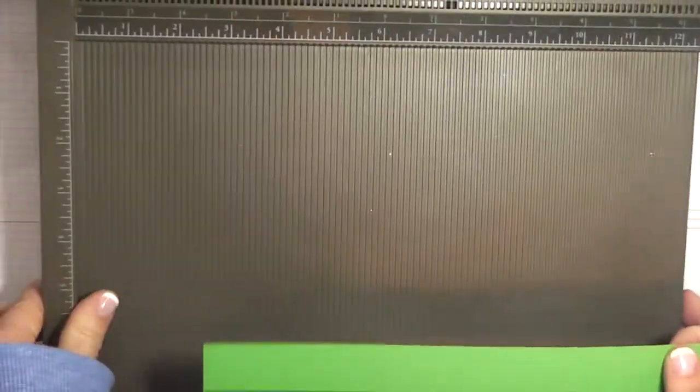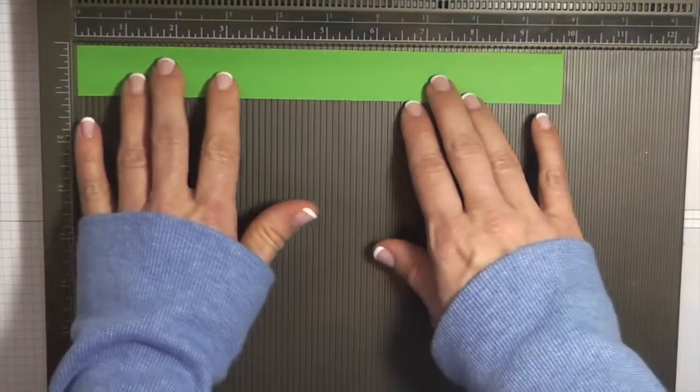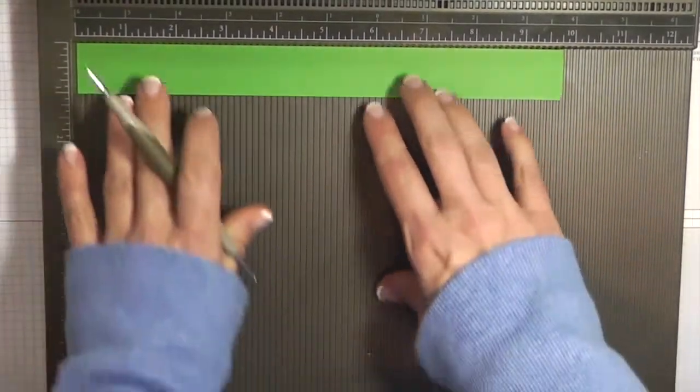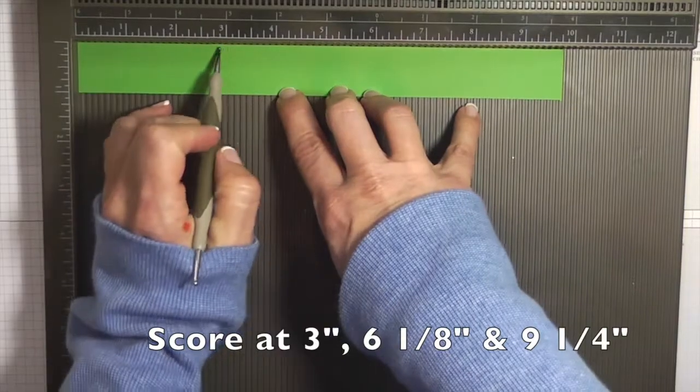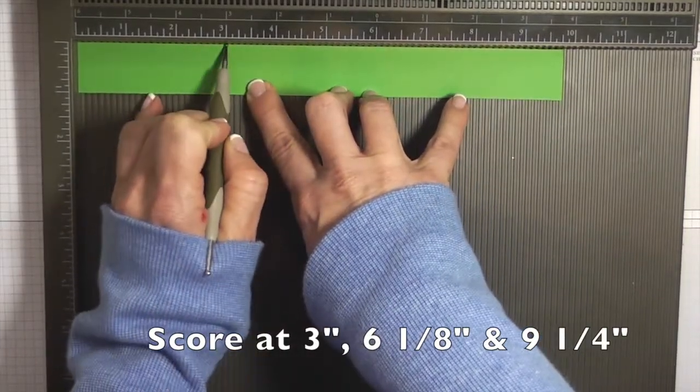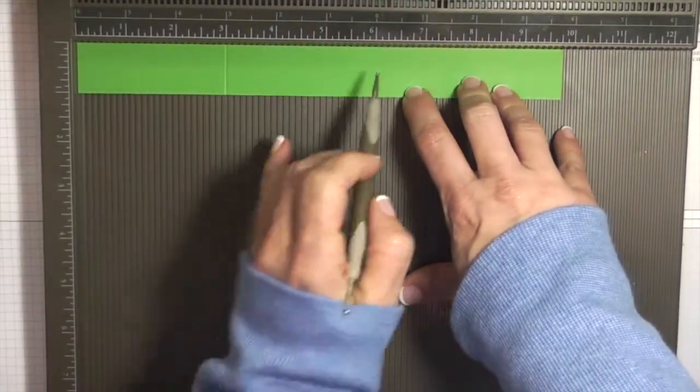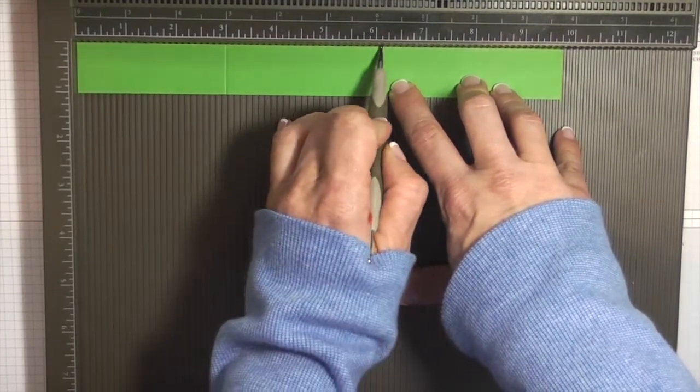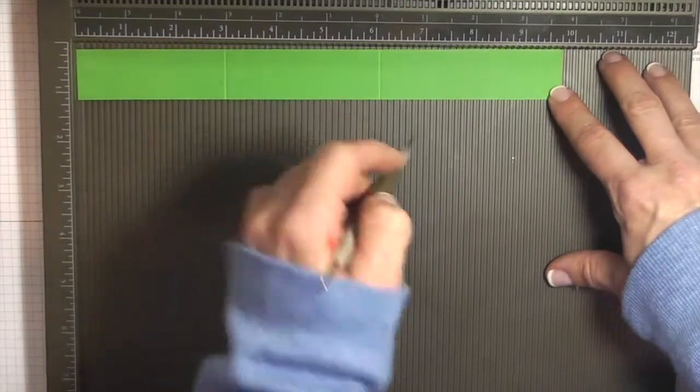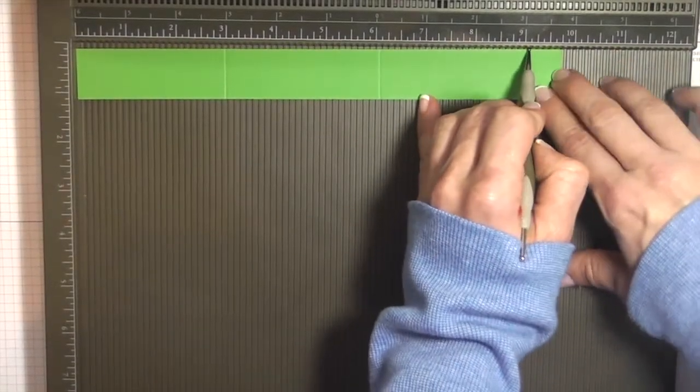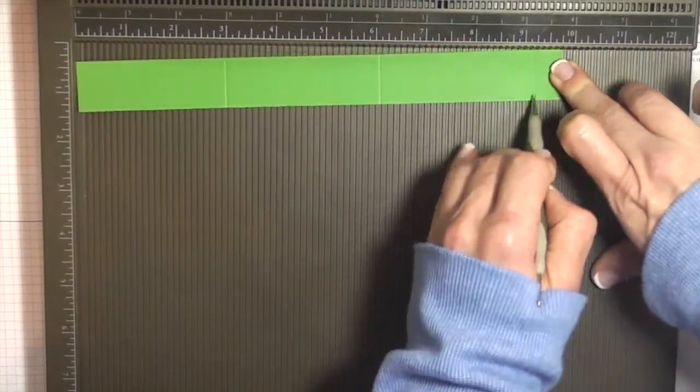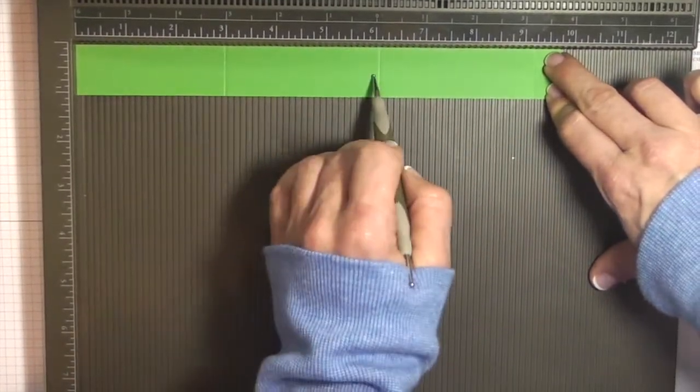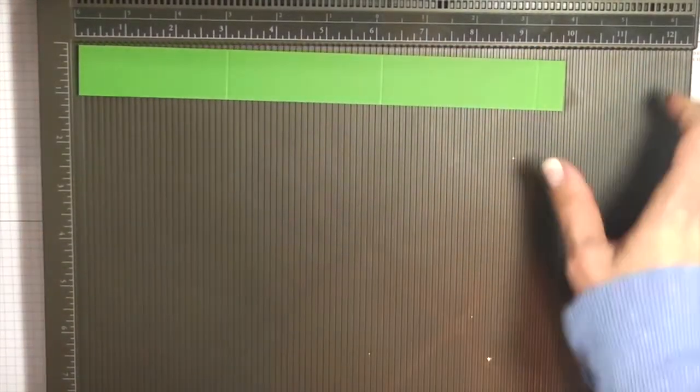So on the nine and three quarters inch strip, you are going to score it three times. So you're going to score it at three inches, six and an eighth, and the eighth mark is the little hash right before the quarter inch mark, and then nine and a quarter. So that was three, six and one eighth, and nine and one quarter inches.